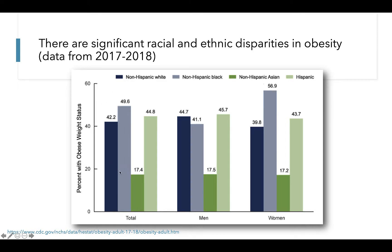When we look at data from men and women combined, we see significant disparity in how obesity affects these racial and ethnic groups. The prevalence of obesity in non-Hispanic white adults is around 42%, which is significantly lower than non-Hispanic black adults who have a prevalence of obesity of around 50%. We see a significantly lower prevalence of obesity in non-Hispanic Asian adults, and a prevalence for Hispanic adults that is higher than that of non-Hispanic white adults. When we look at data for men and women separately, non-Hispanic black women have the highest prevalence of obesity.